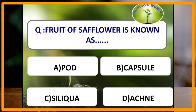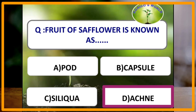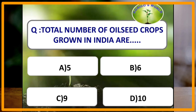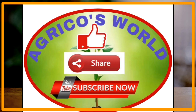Most serious disease of sesame is Phyllody. The crop known as poor man's substitute of ghee is sesamum. Fruit of safflower is also known as achene. Linseed, i.e., Linum usitatissimum, is used for both oil and fibre purpose. Total number of oilseed crops grown in India are 9, and among them 7 are edible. Thank you, please like, share and subscribe to our channel Agrico's World.